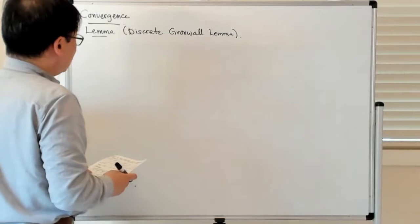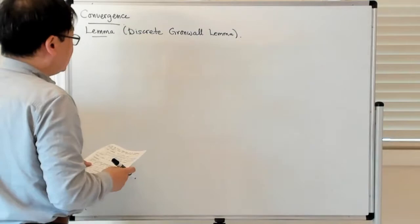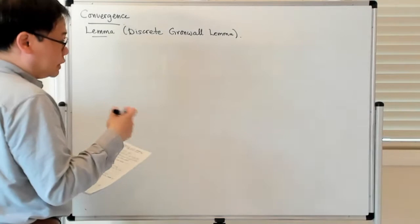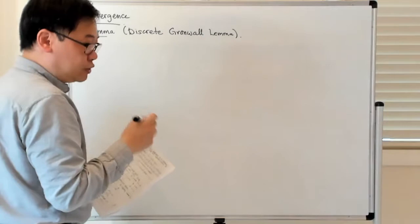What's going to end up happening is that the error at the new step is going to be related to the error at the old step in a certain way. It's going to satisfy some sort of recurrence inequality, and we're going to ask, given this inequality, what can we say about the accumulated error.